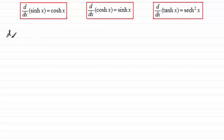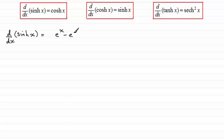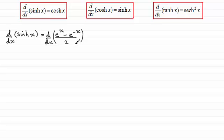So let's start with the first one: differentiating with respect to x the hyperbolic function sinh(x). You should be familiar with the definition of sinh(x) — it is e to the power x minus e to the power minus x, all divided by 2. So we've got to differentiate all of this with respect to x. Because we've got the constant 2 in the denominator, we can think of this as a half multiplied by the differential of the top.